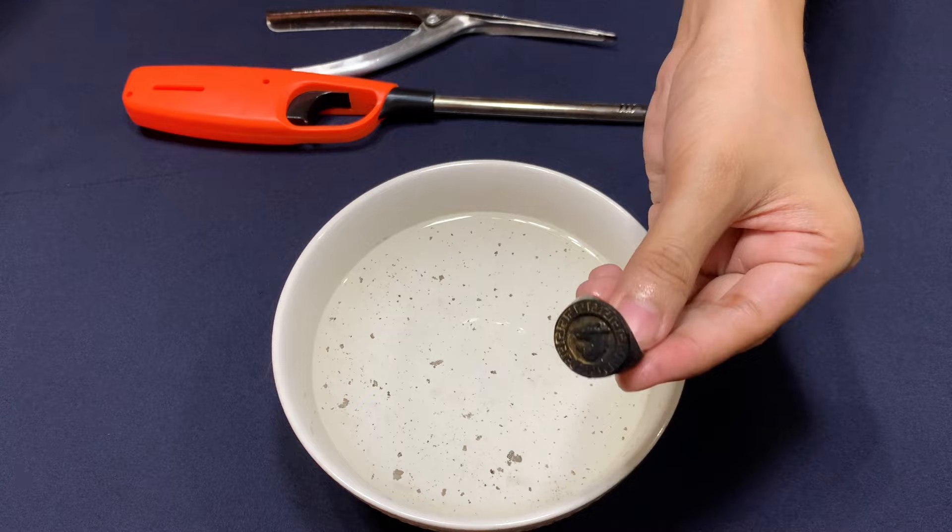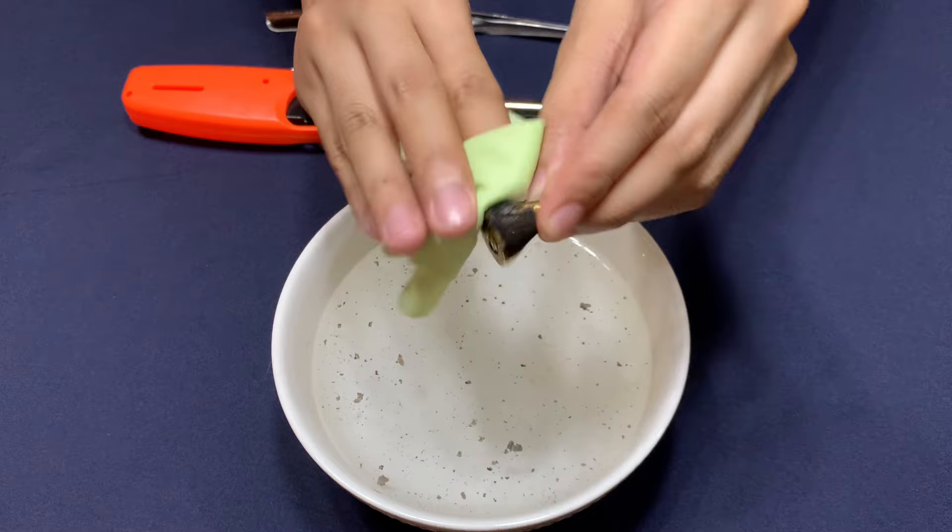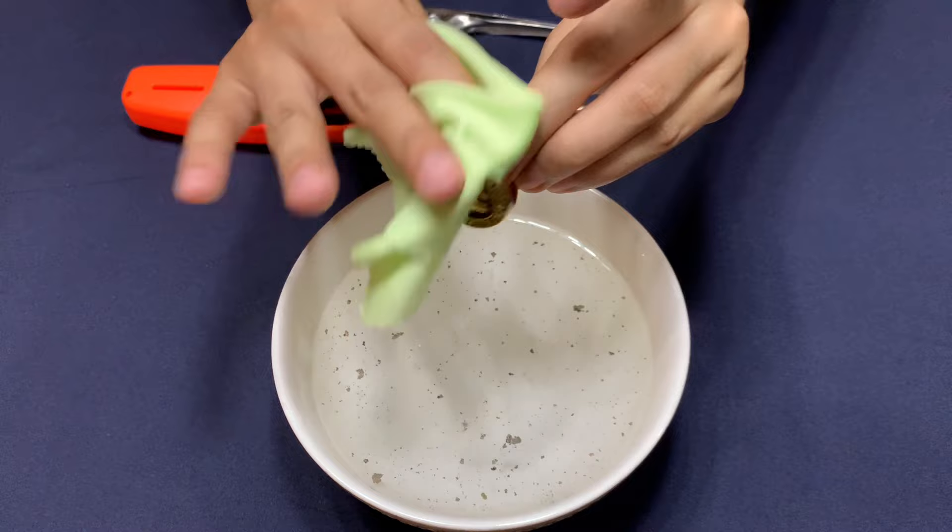On the other hand, fake or plated gold will react to the flame and change color. You can wipe down burn marks on gold-plated jewelry. However, you will still notice color differences.